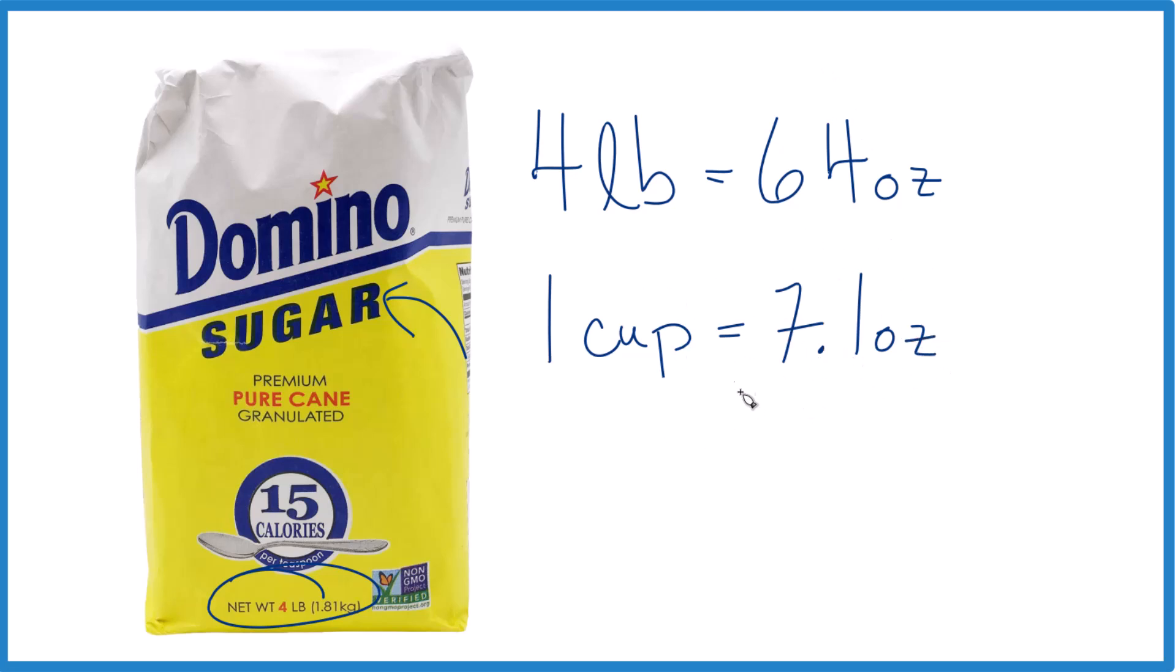If we want to know how many cups are in our four-pound bag, we need to take 64 ounces and divide it by 7.1 ounces. Remember, that's 7.1 ounces in one cup, so ounces per cup.